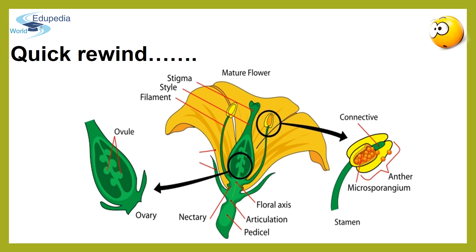Androecium is the male reproductive part and includes stamens. Stamens are composed of anther, filament and connective. Here, I shall not go into much detail but just quickly recollect the terms and proceed. You can also see the gynoecium, which is the female reproductive part of the flower.